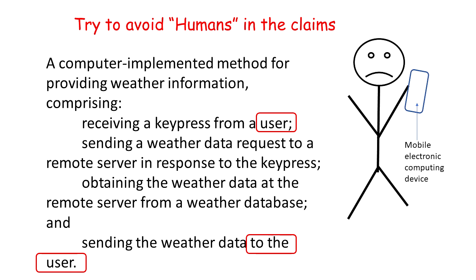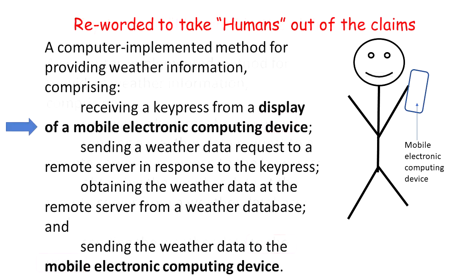When we think about it in more detail, the user presumably has his or her phone, which we can generalize as a mobile electronic computing device. We can take the activity performed by the user and instead rewrite the claim in terms of the electronic computing device — the phone that belongs to the user. Here is a reworded claim to take the humans out of the equation. Our human is happy again now that he has his mobile electronic computing device.